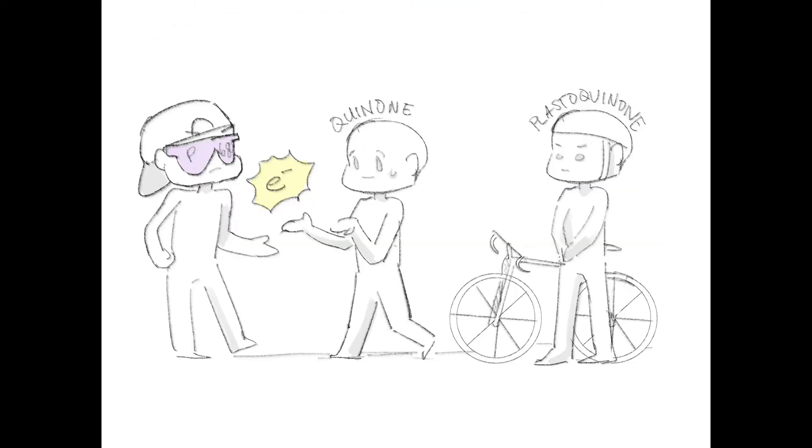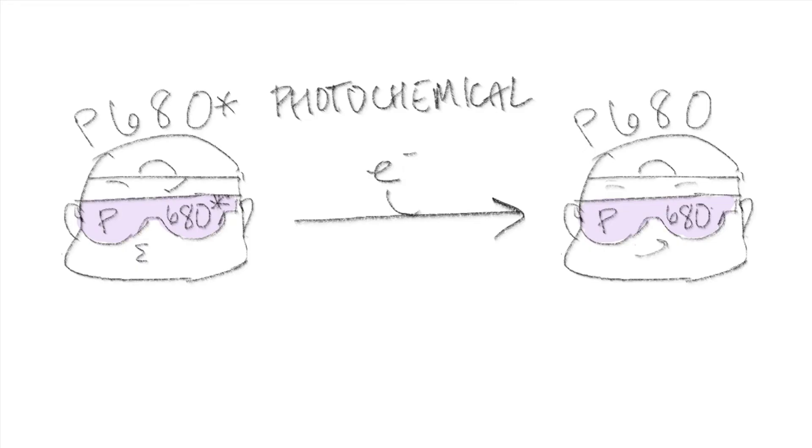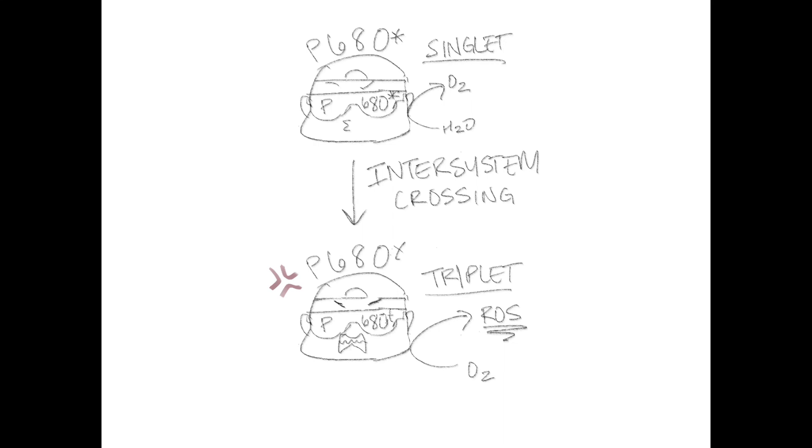In RC2 cyclic flow, however, the reduced quinone transfers its electrons to P680 in the singlet excited state instead to re-reduce it to its ground state. This prevents the excited P680 from having a chance to convert into its triplet state and form ROS.